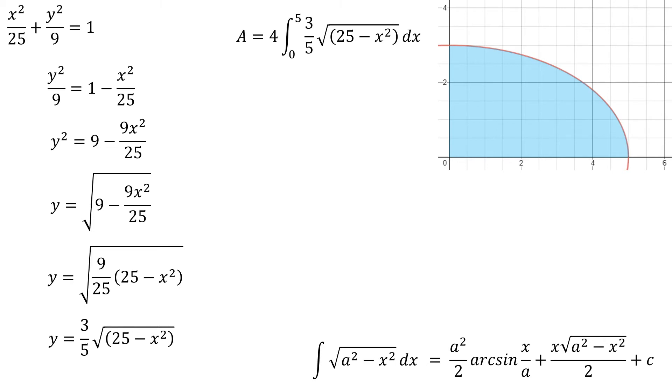So the area will be 4 times that integral. So from left to right, I'll go from 0 to 5. The height of each of those rectangles is going to be 3 5ths times the square root of 25 minus x squared. And of course, the width of each rectangle is just dx.